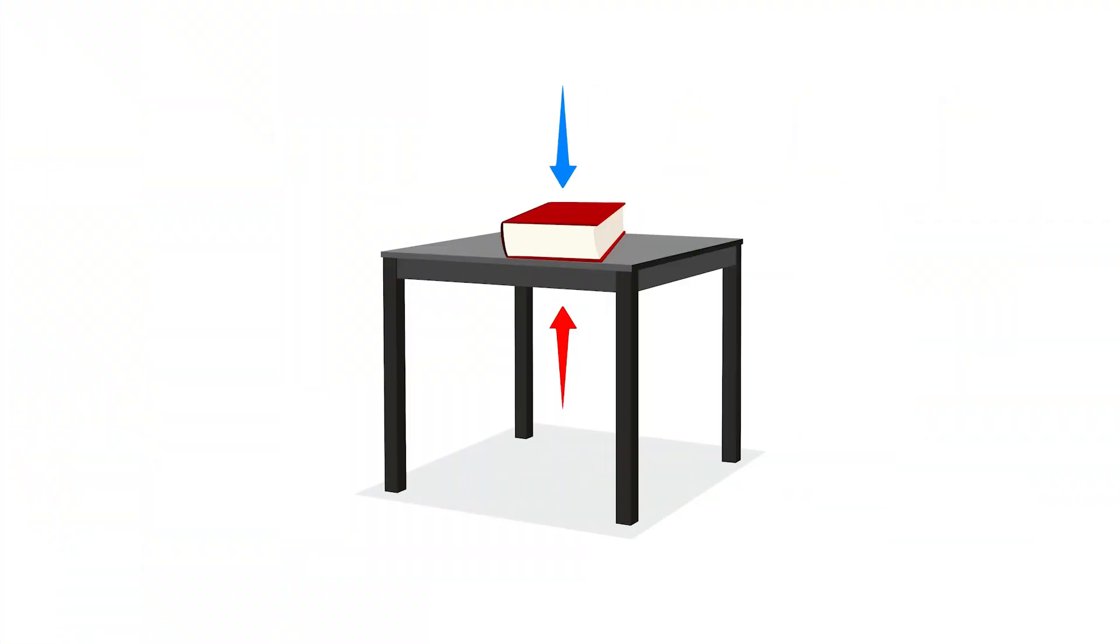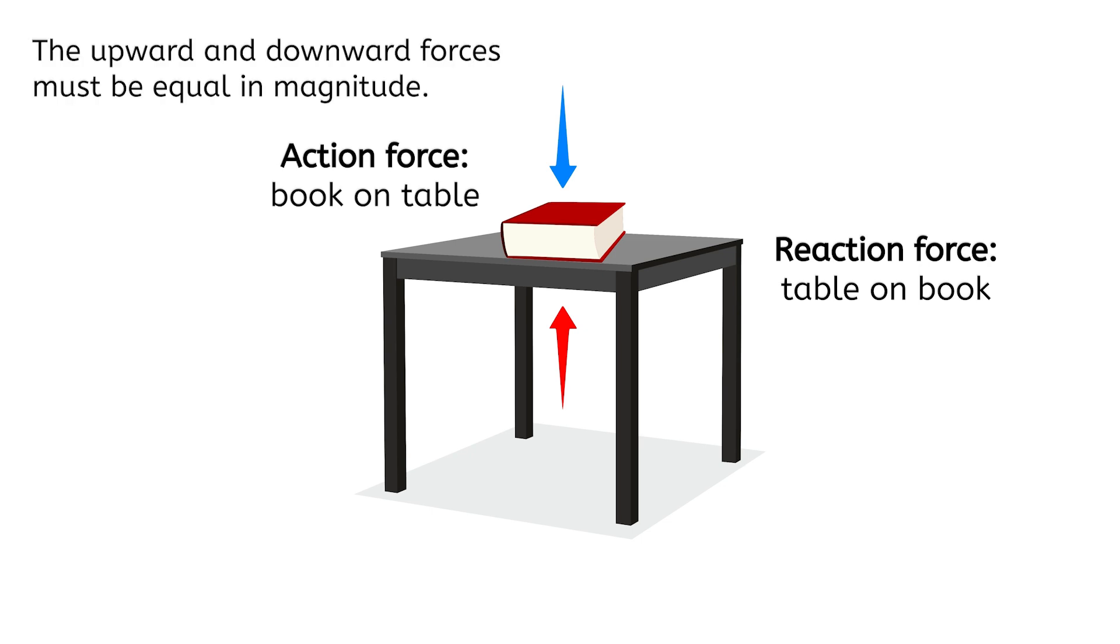We'll start with an easy one. If a book sits on a table, the action force is the downward force of the book on the table due to gravity. What is the reaction force? It's the exact opposite, so the reaction force is the upward force that the table exerts on the book. We don't know how many newtons of force exist here without knowing the weight of the book, but we know that the upward and downward forces must be equal in magnitude.